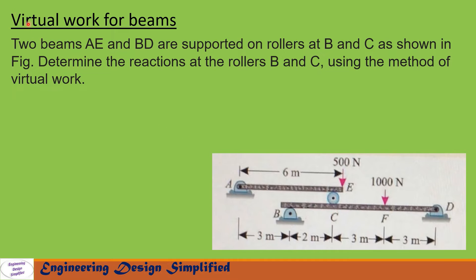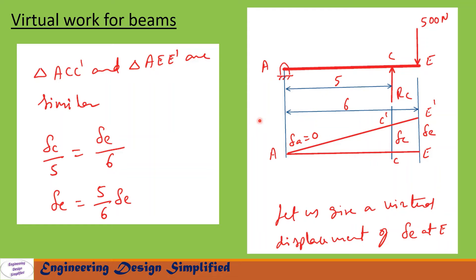Let us see in the coming slides how to solve this problem. First, let us take beam ACE. The length from A to C is 5 meters and from A to E is 6 meters. There is a load of 500 N acting vertically downwards at point E, and there is a reaction due to the roller at C acting vertically upwards. At end A, it is hinged. Now let us give a virtual displacement of delta E. The beam will assume the position A, C prime, and E prime. At this end we have a displacement of delta E, at C it is delta C, and at A, delta A equals 0.